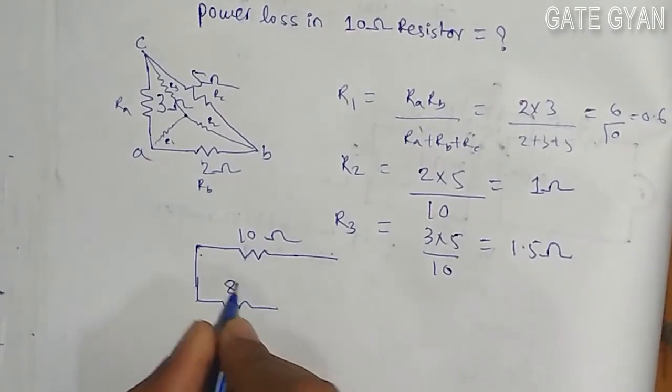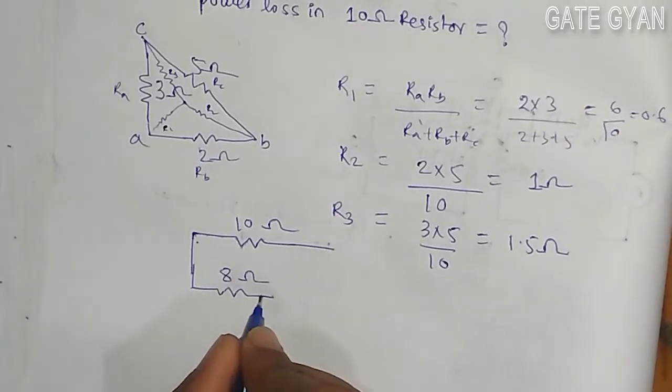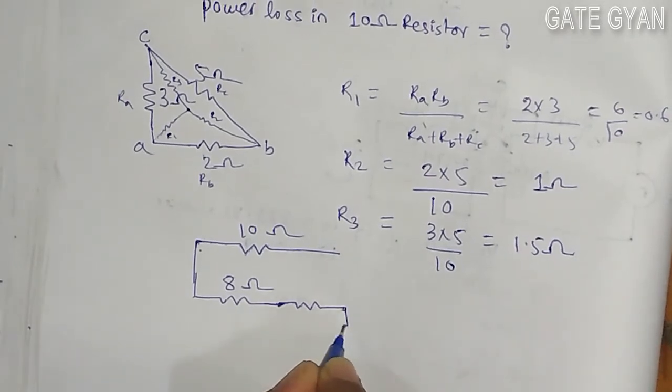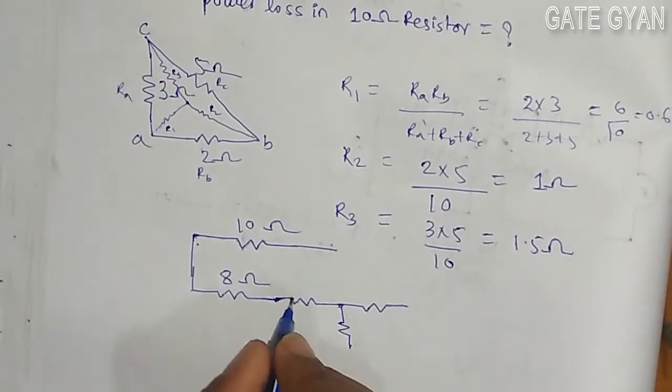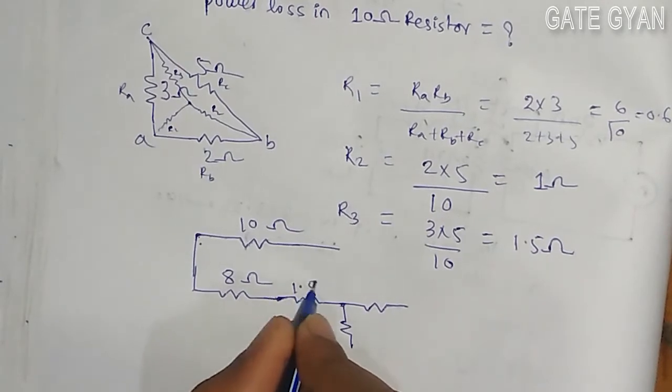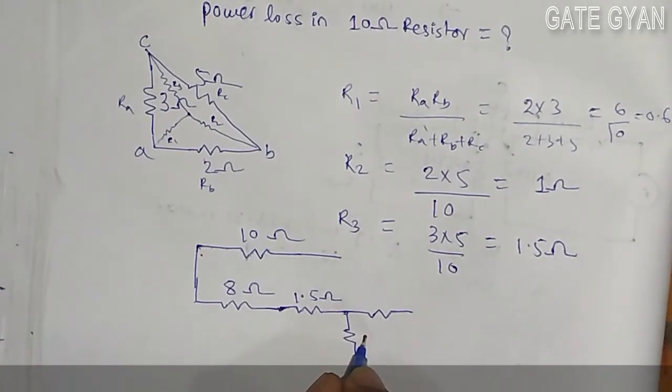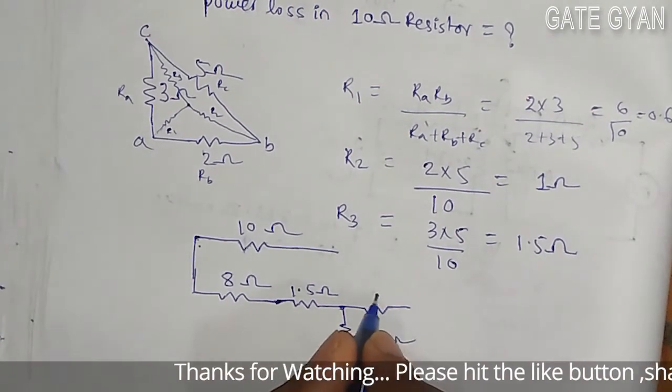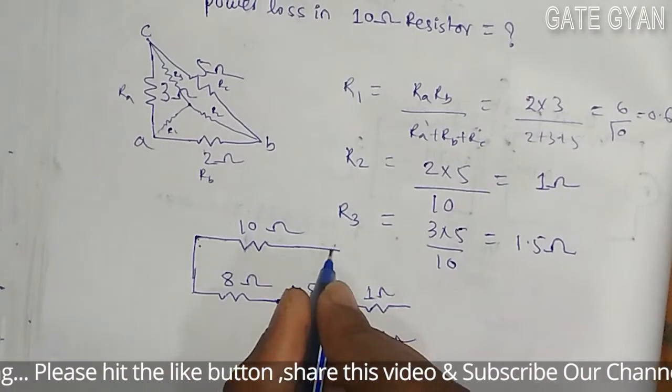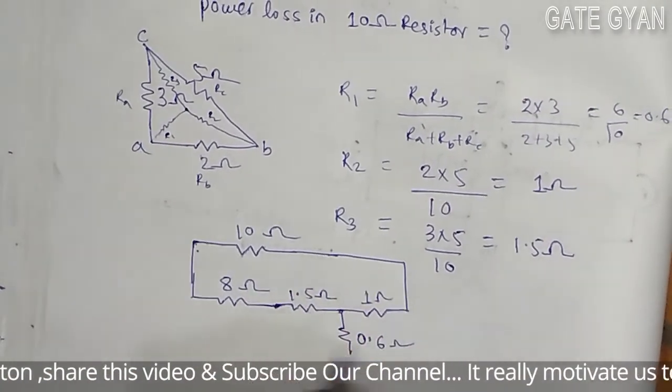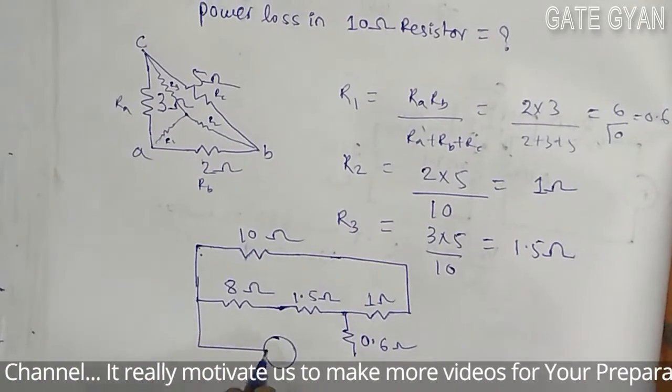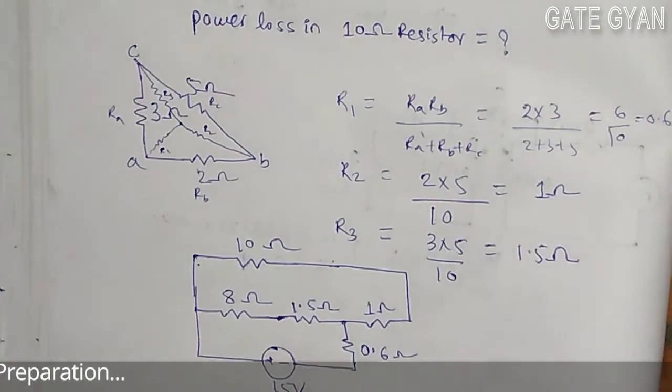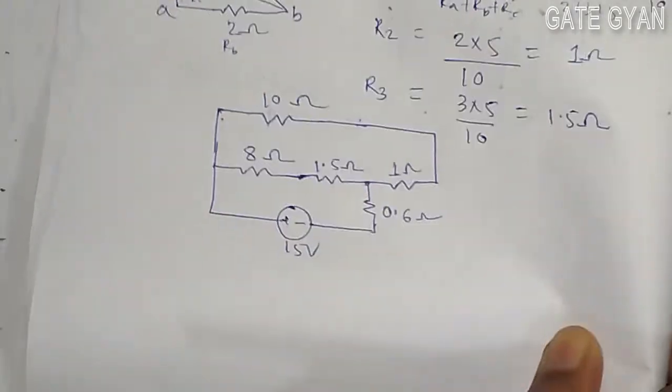This is my 8 ohm, this is my 8 ohm. From here I am bringing it into star form. This is 1.5 ohm r3, this was r1 so it is r1 is 0.6 ohm, and r2 is 1 ohm. So now the circuit will look like this.